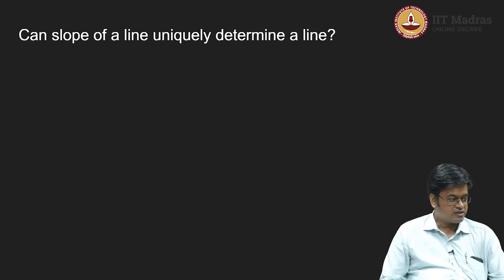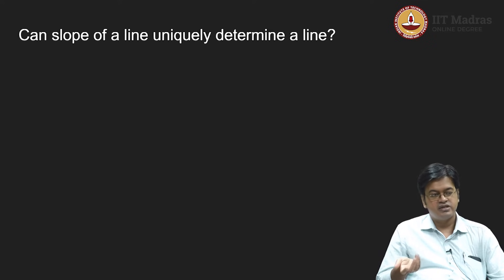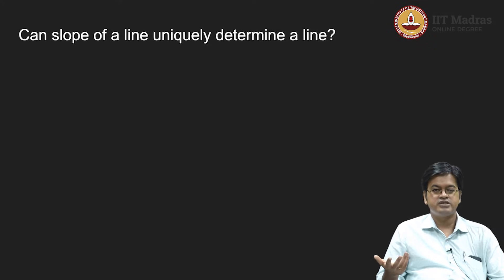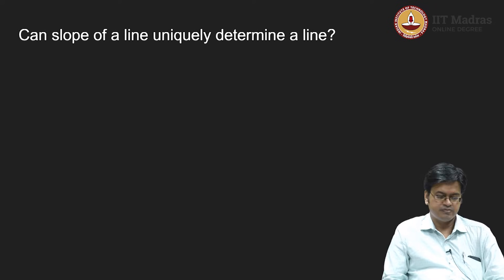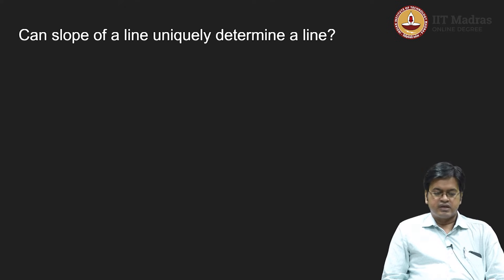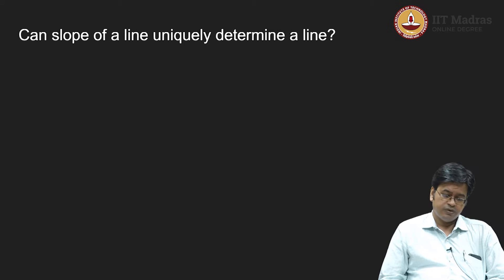The question can be asked: if a line is given to me, I can uniquely determine the slope. But if a slope is given to me, can I uniquely determine a line? That is the next question I will put up. In essence, the question asks: can there be many lines with the same slope?